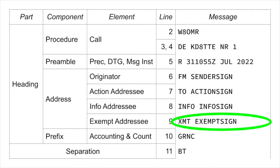But sometimes you're sending it to almost everyone and exempting only a small group. In that case, it's easier to send "to" or "info" to the group and then to exempt the part of the group that should not get the message.